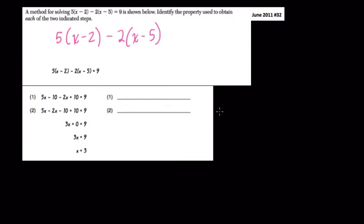So here, step 1, and I'll write in case you can't see it, they wrote 5x minus 10 minus 2x plus 10 equals 9. Well, here, that equals 9. All they did was distribute, right? 5 times x is 5x. 5 times negative 2 is negative 10. And so forth. Negative 2 times x is negative 2x. Negative 2 times negative 5 is positive 10. I would just write distributive property here.